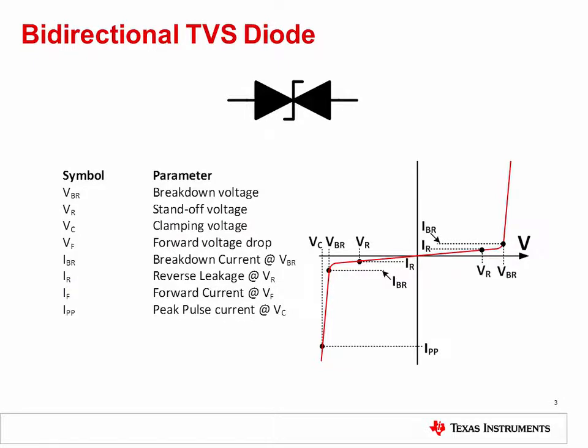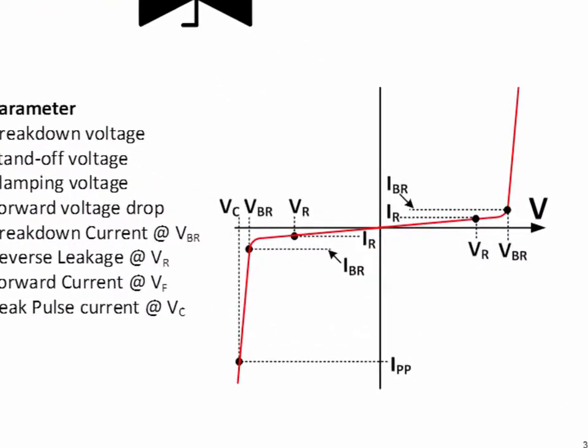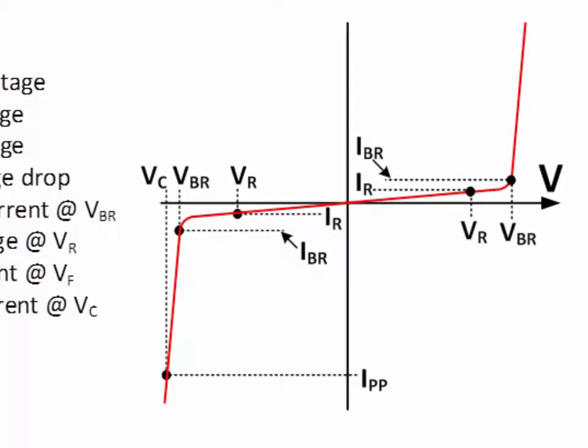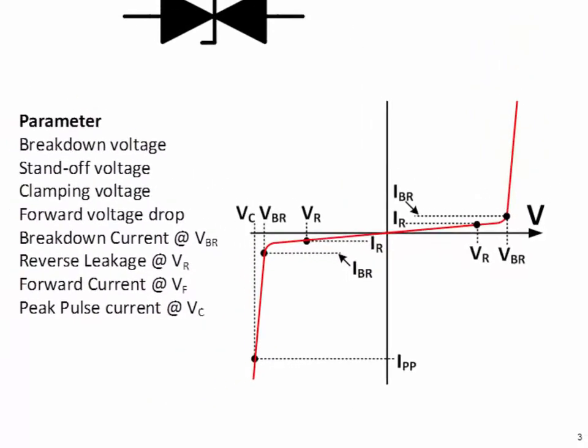In EOS 1, we introduced the transient voltage suppressor, or TVS diode. Let's now discuss the bidirectional TVS diode. This device simply acts like two TVS diodes connected at their cathode. It will remain off from the negative breakdown voltage to the positive breakdown voltage. Once the breakdown voltage is exceeded, it will turn on and dissipate large amounts of power.